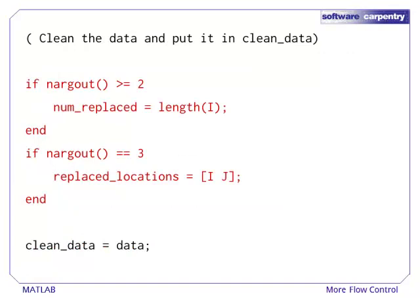After we've interpolated all of the values that need to change, we assign the extra return values as needed. If the caller requested a second variable, we assign the length of the replacement vector to numReplaced.